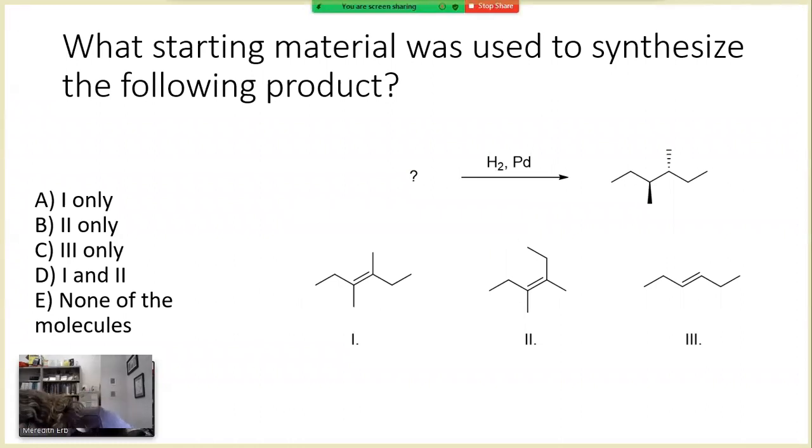It's really important to take a look at our product because that's going to dictate what starting material we had. In this case, we have our two hydrogen atoms right here. Then we can see that there was a tetrasubstituted alkene as our starting material because there's one, two, three, and four carbon atoms that are present.